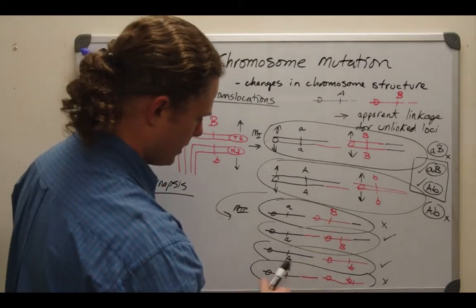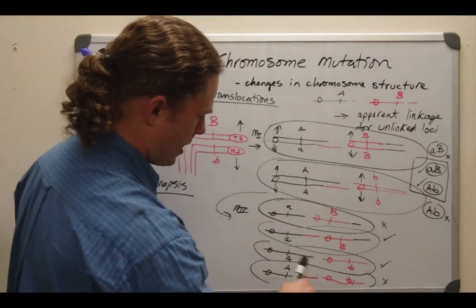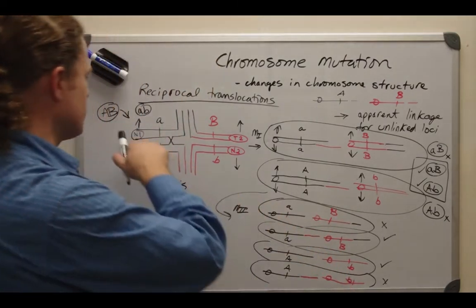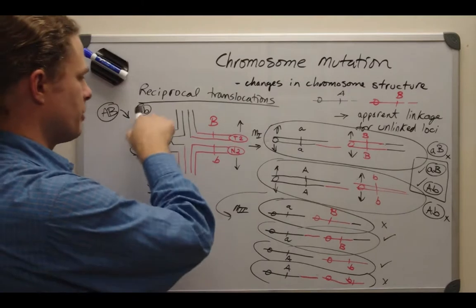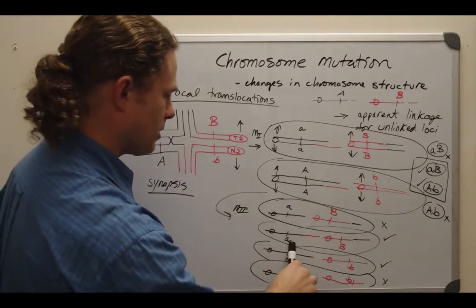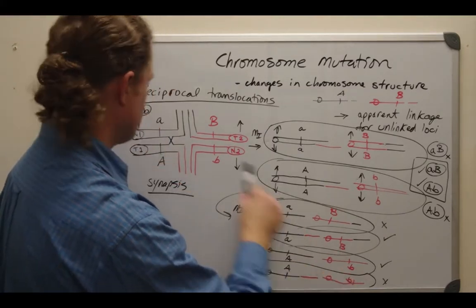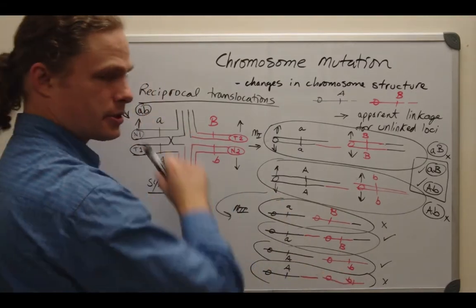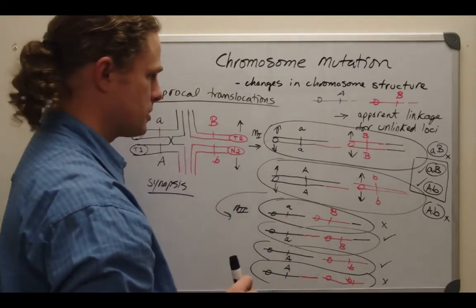Importantly, big A with little b is a recombinant — it's not one of the inputs. Likewise, little a with big B is a recombinant and also not one of the inputs.